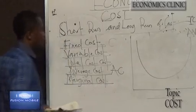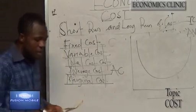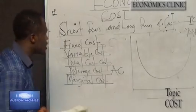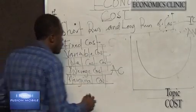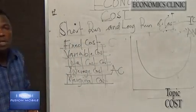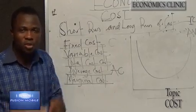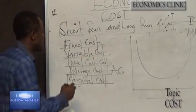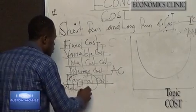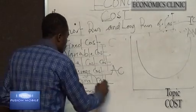Next is marginal cost. This is the addition to total cost resulting from the production of extra units output. This is actually an addition because the word marginal means additional extra units to total cost.